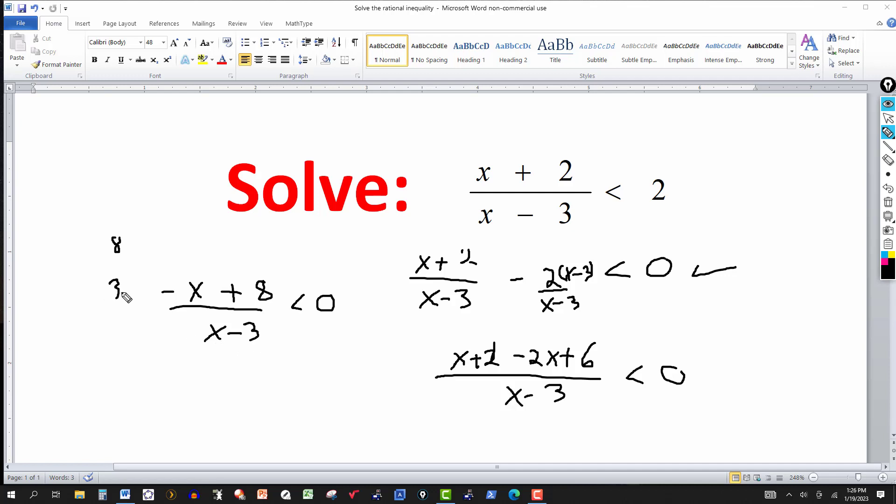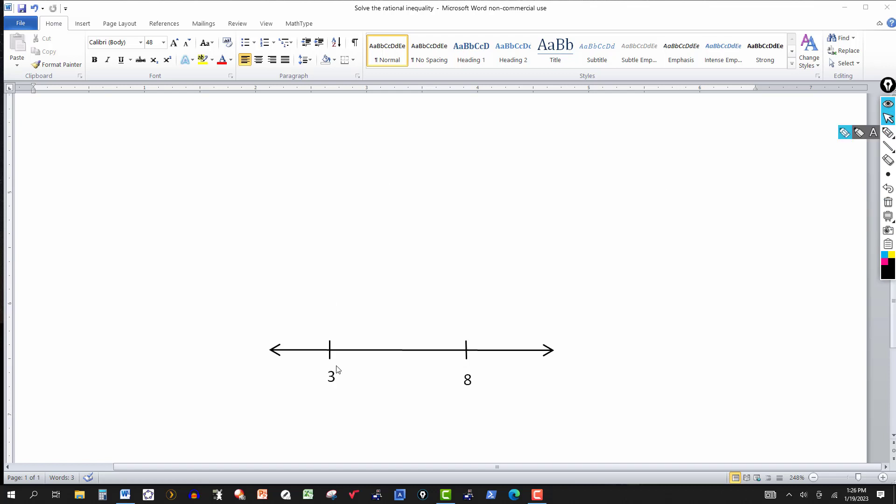To complete the solution, we simply create a number line. We plot these zeros that we got on the number line. So here's the 3 and the 8. We think of infinity, positive infinity over here somewhere to the right, and negative infinity over here somewhere to the left. And then I rewrite the expression here: minus x plus 8 over x minus 3 less than 0.